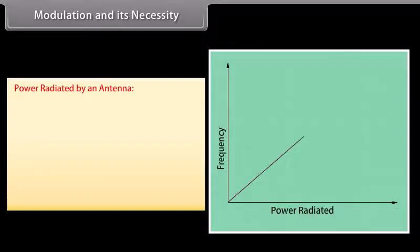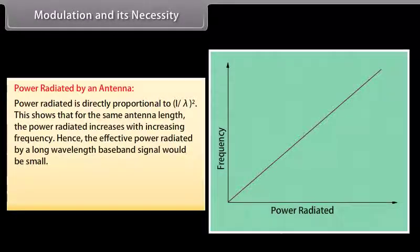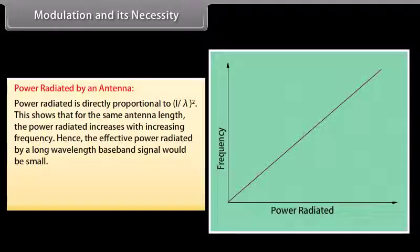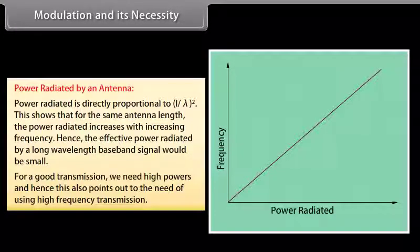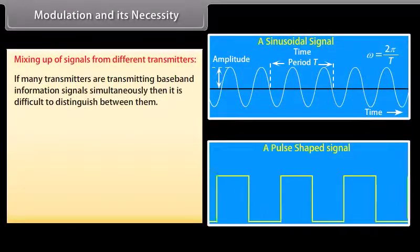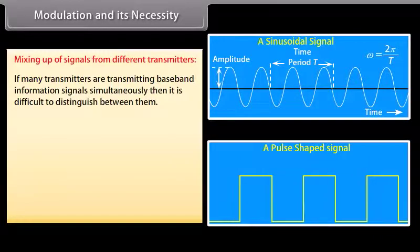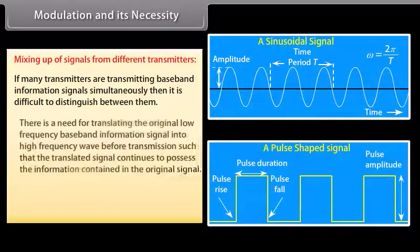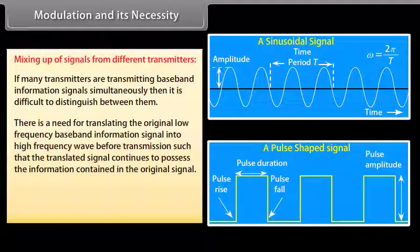Power radiated by an antenna is directly proportional to (L/λ)². This shows that for the same antenna length, the power radiated increases with increasing frequency. Hence, the effective power radiated by a long-wavelength baseband signal would be small. For good transmission, we need high powers, which also points to the need for high-frequency transmission. If many transmitters are transmitting baseband information signals simultaneously, it is difficult to distinguish between them, necessitating translation of the original low-frequency signal into high-frequency waves before transmission.